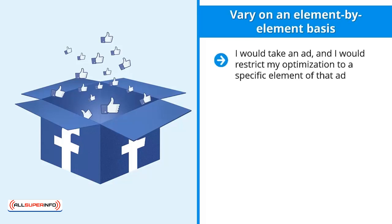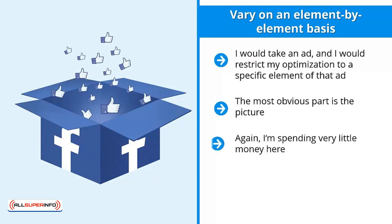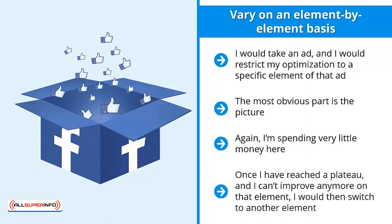Vary on an element-by-element basis. Take an ad and restrict your optimization to one specific element at a time. Every ad has many elements: the graphics, the heading, the description, the link. Start with one element and come up with different versions. The most obvious part is the picture — play around with different pictures and see which gets the most clicks, then vary that picture to see if you can improve your click-through rate further, spending very little money.